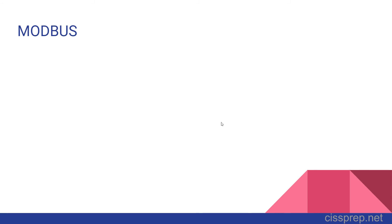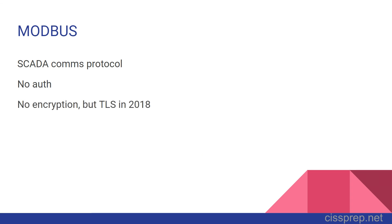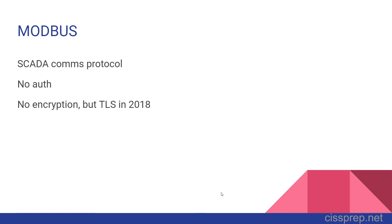Modbus is a new term in Domain 4 but not new in the industry. It's a communications protocol widely used in SCADA infrastructures such as refineries or petroleum pipelines. It doesn't provide authentication, and information is passed without cryptographic protections for confidentiality and integrity, and it could have multiple mechanisms for denial of service attacks. In 2018, TLS was adopted to provide confidentiality and authenticity.